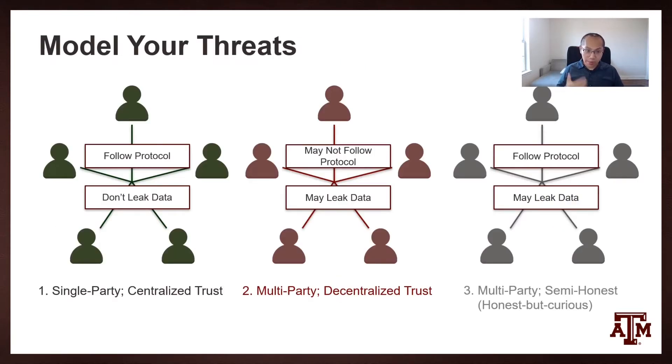To identify how these security properties could be protected in your system, you need to first model your threats. Here are a few common threat models people will consider. The first model is a single party model where all the entities are in the same camp. They're likely to follow protocols and not leak data. This is considered a centralized trust model. The second model is a multi-party model where everybody's on their own. They're potentially malicious and may not follow protocols and could leak data. This is called a decentralized trust model. The last case is kind of in the middle. In these models, you can have multi-party models where the trust is decentralized. However, all the entities and parties are semi-honest, meaning they will follow protocol honestly, but there's potential chances they could leak data, which is also called an honest but curious model.